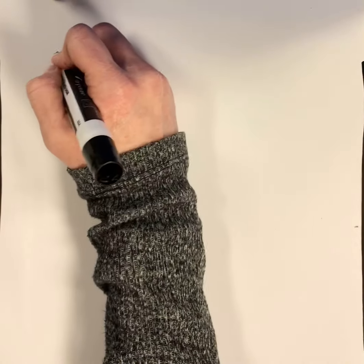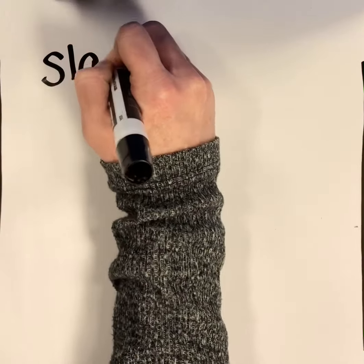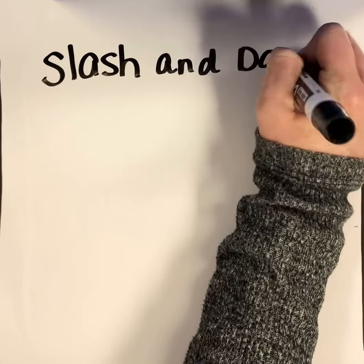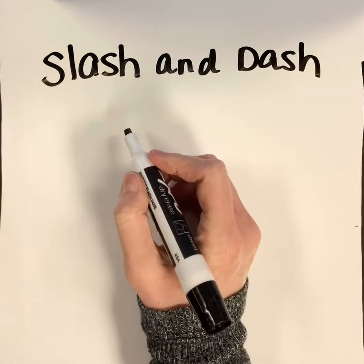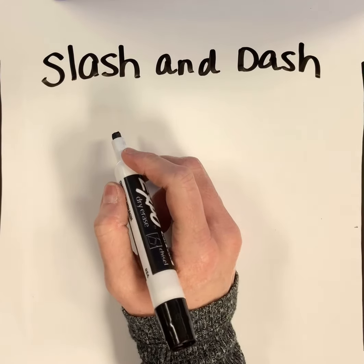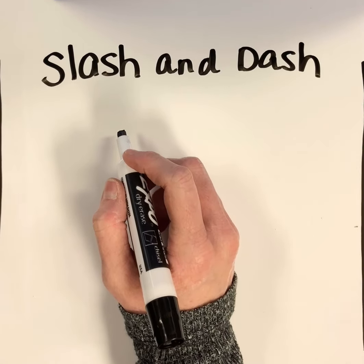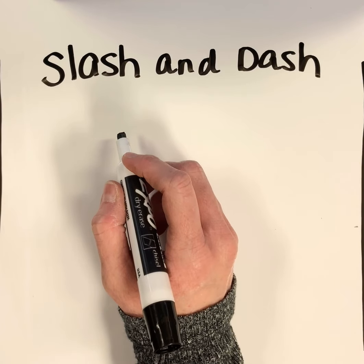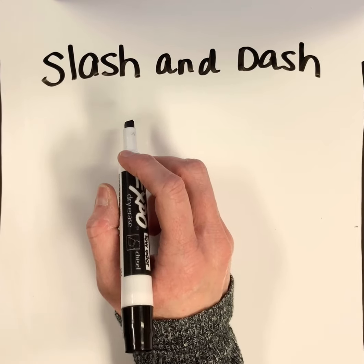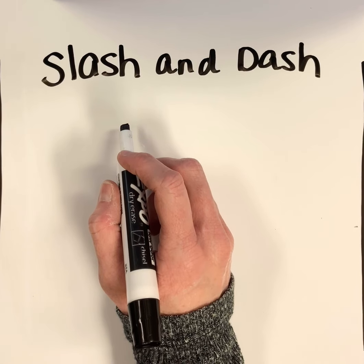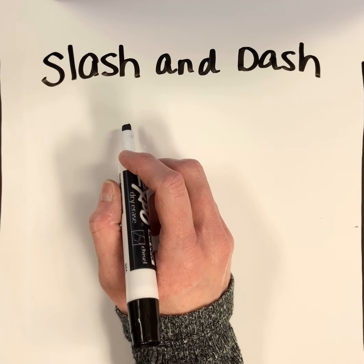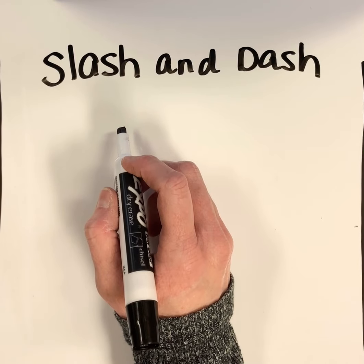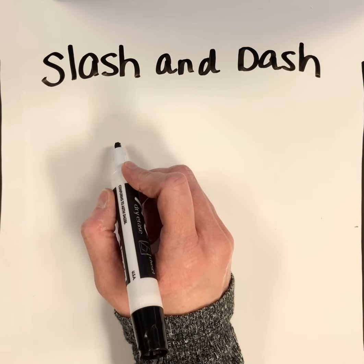All right, we are going to do today some slash and dash. We are going to start out with the word circulation. When we talked about the heart and the blood and the veins and the circulatory system in our body, we talked about circulation — how the blood runs through our body and through our veins.